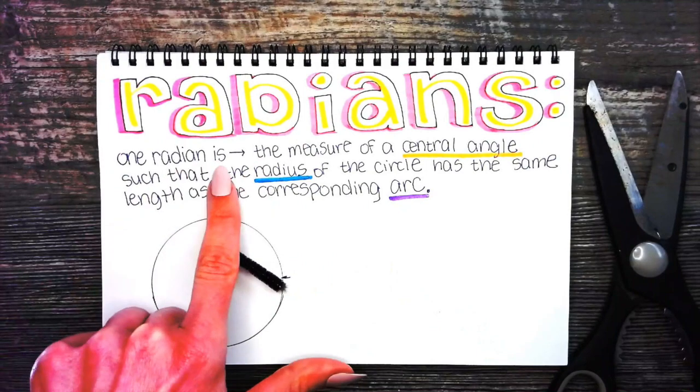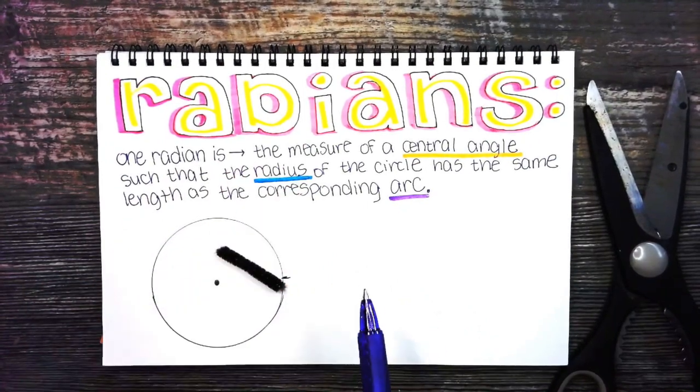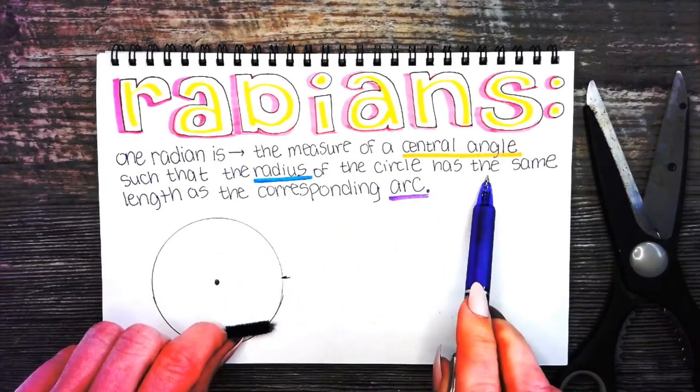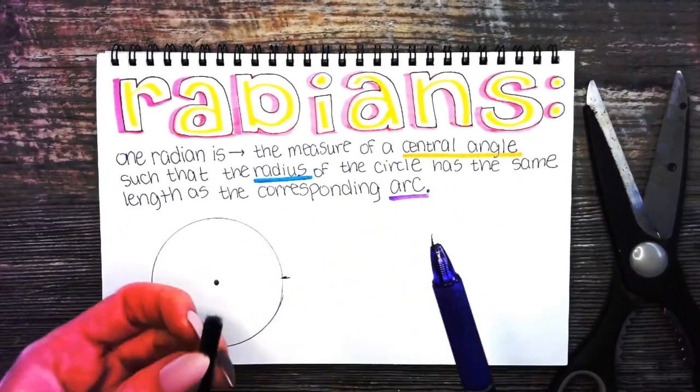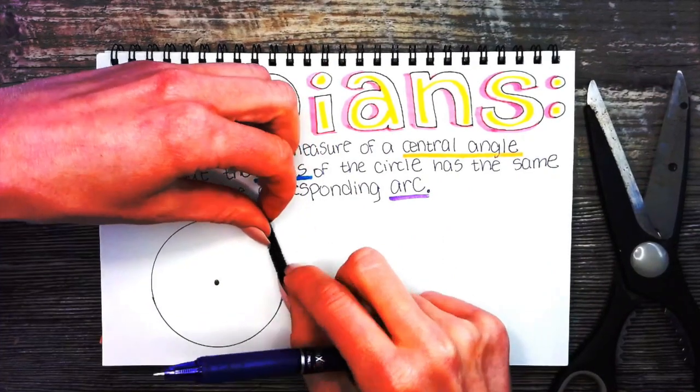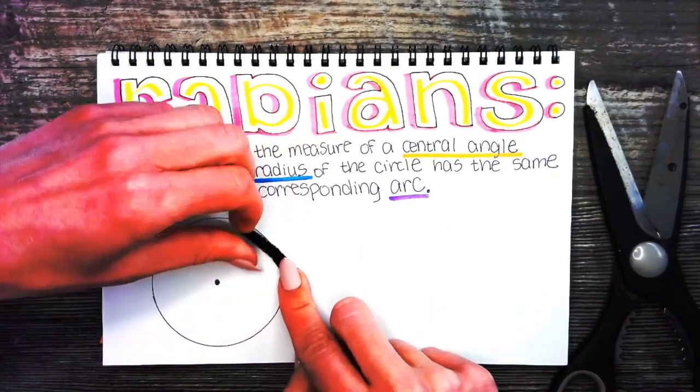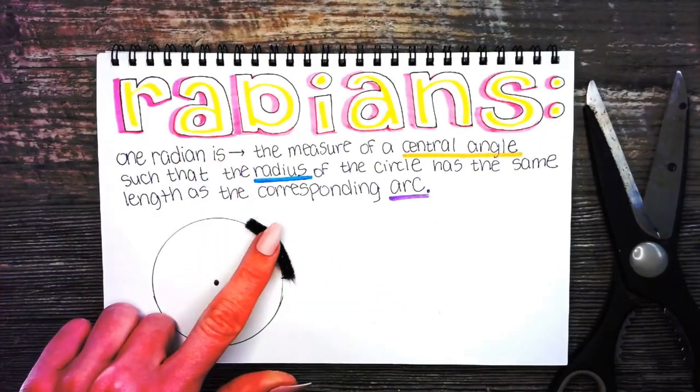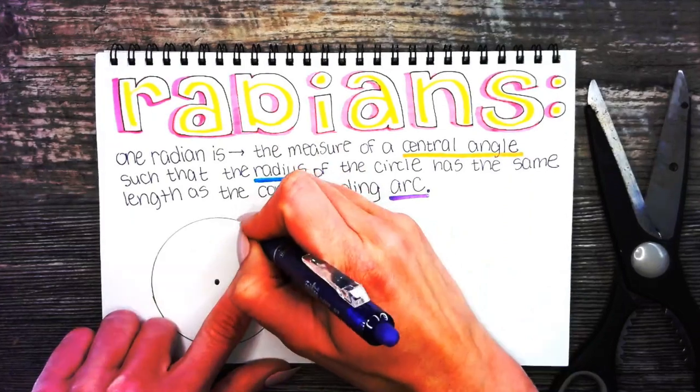One radian is the measure of a central angle such that the radius of the circle has the same length as the corresponding arc. I'm going to take this radius and bend it. Now I need that length to also be of the arc.